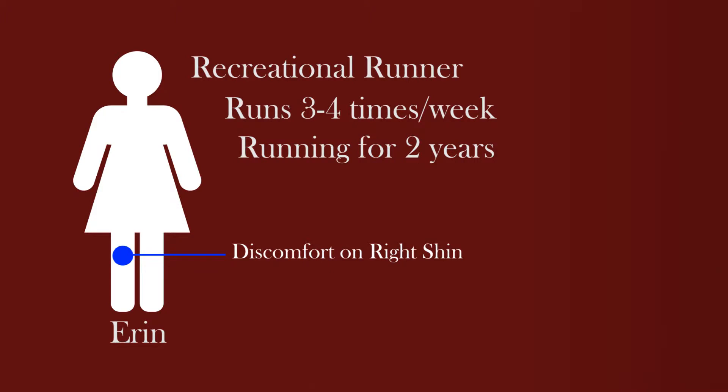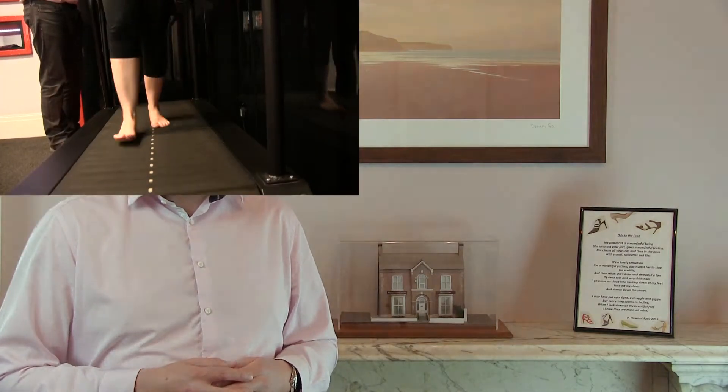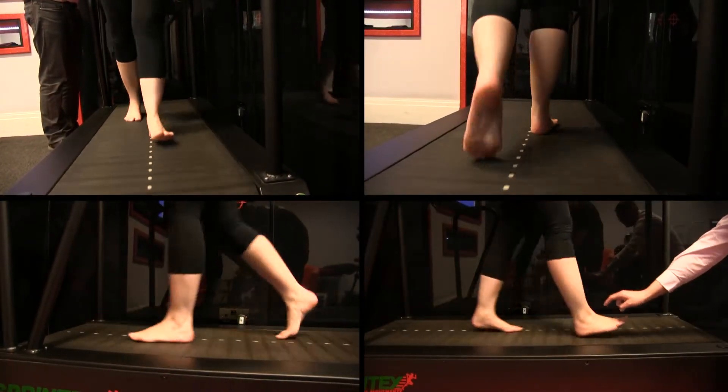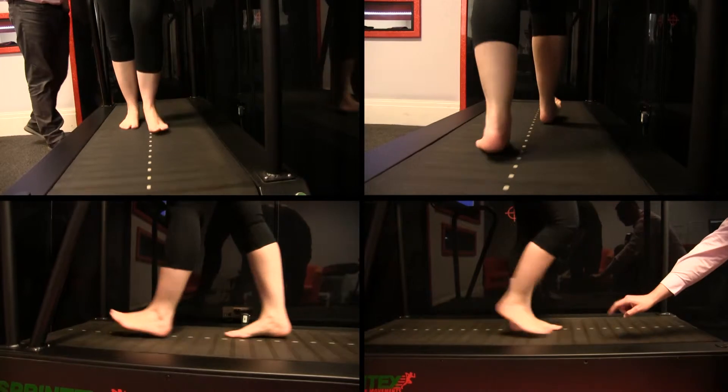We're going to assess the way that Erin runs and have a look at what happens to her movements around her joints when she's running. We're going to assess Erin from all four sides so that we can look at the movements in all of the different planes.